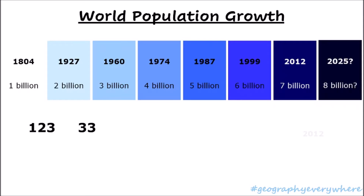Between 1960 and 1974, when the world went from 3 billion to 4 billion people, it took even less — just 14 years. Between 4 and 5 billion it took 13 years; between 5 and 6 billion, 12 years; between 6 and 7 billion, 13 years. And it is projected that it will take another 13 years to reach the next billion. So between the 1st and 2nd billion there were over a thousand years, but between the 5th and 6th billion there were only 12 years.